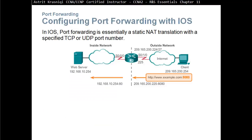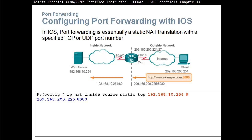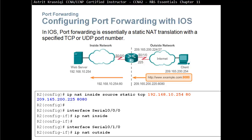Configuring port forwarding with IOS: port forwarding is essentially a static NAT translation with a specified TCP or UDP port number. For example: 'IP NAT inside source static TCP 192.168.10.254 80 209.165.200.225 8080' — so if a client uses that public IP with port 8080, the router translates and forwards the communication to the internal web server.